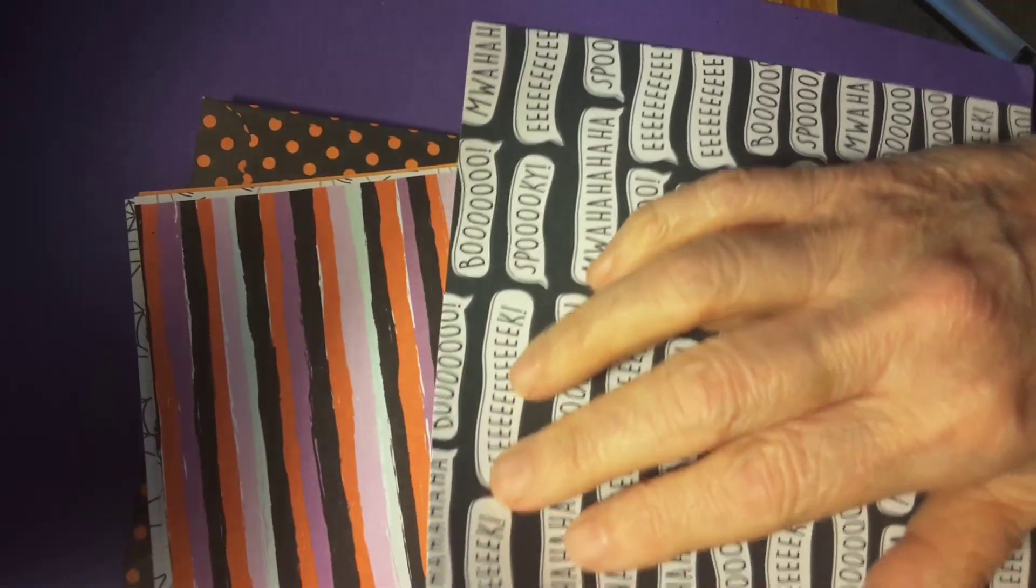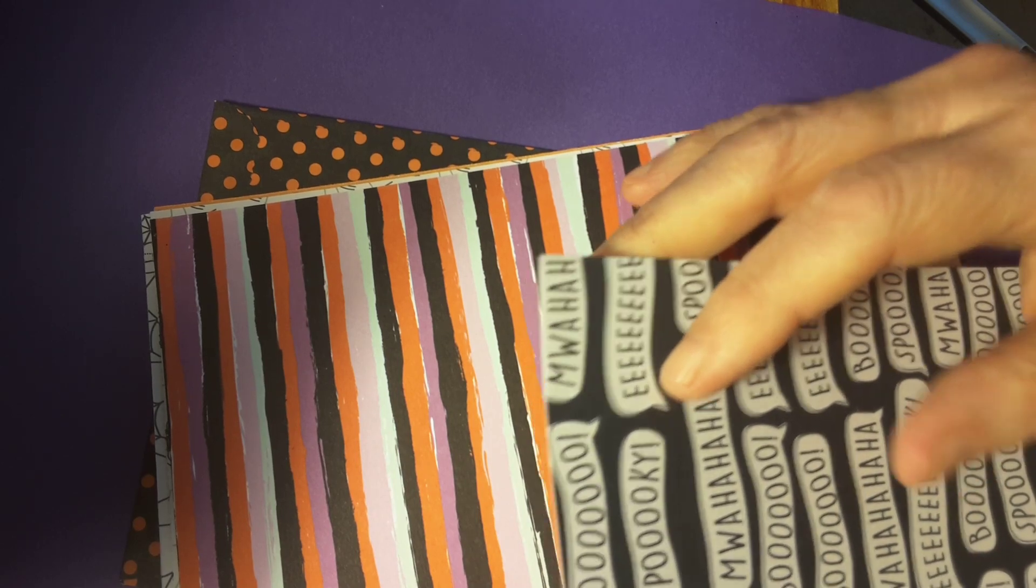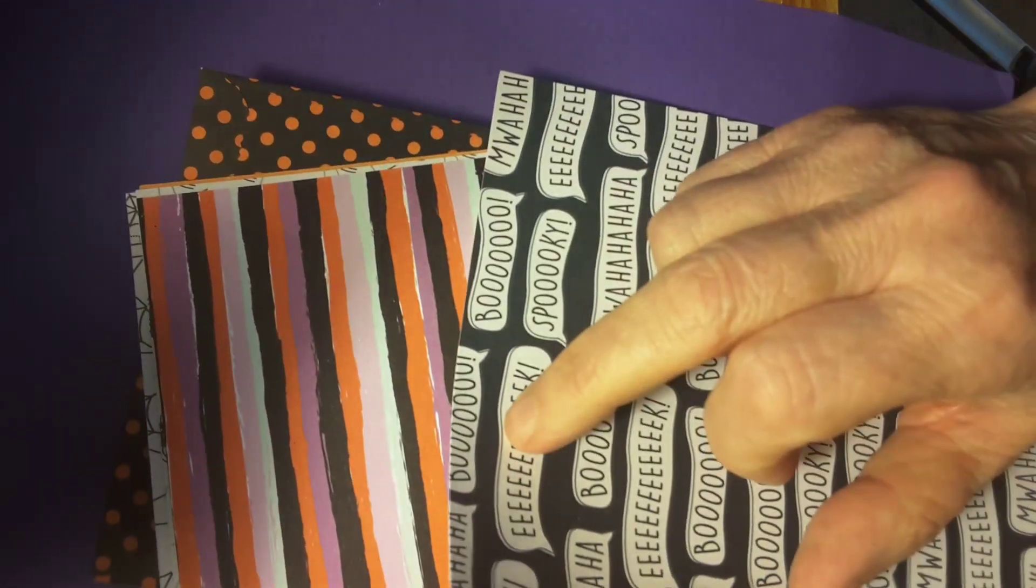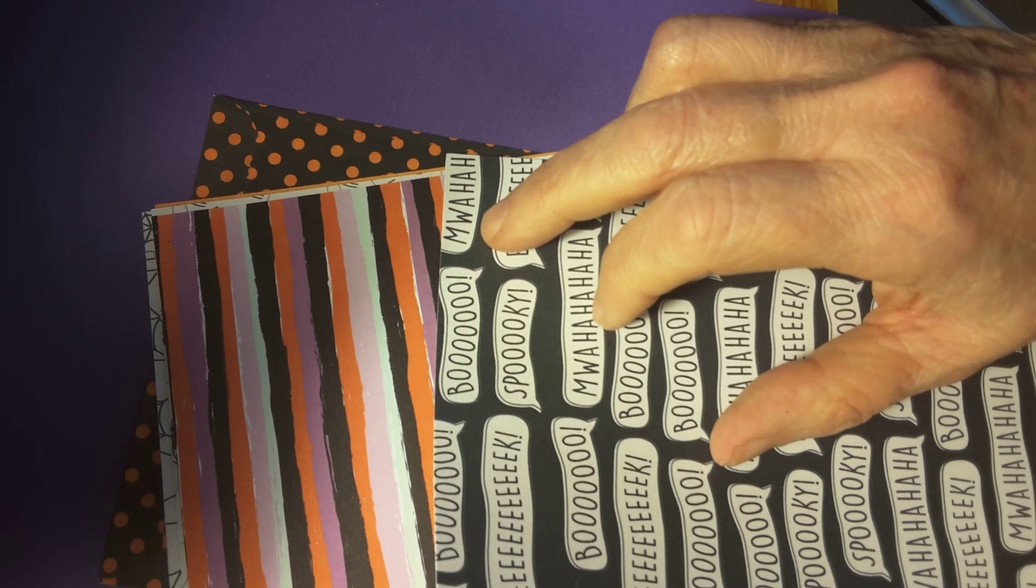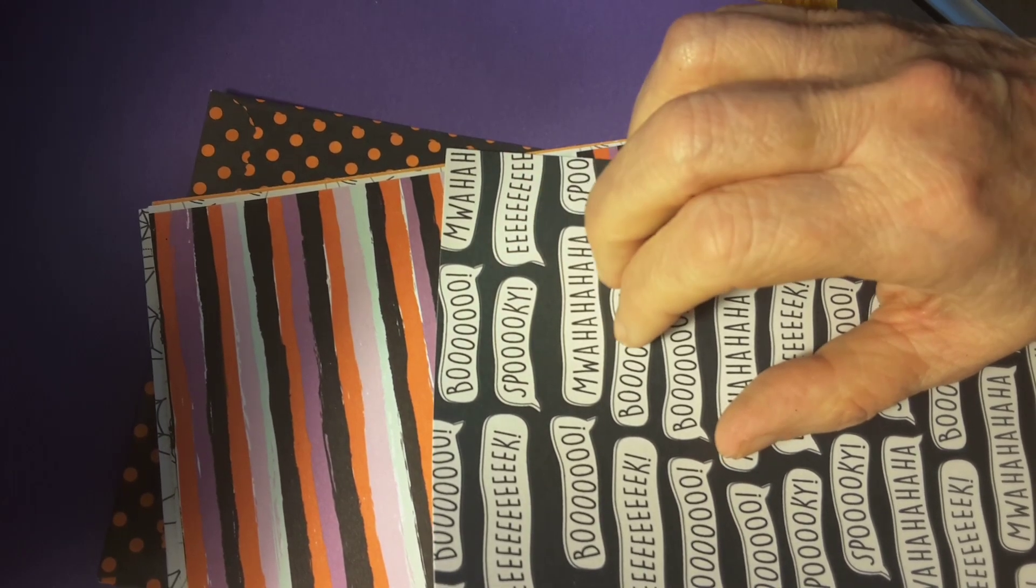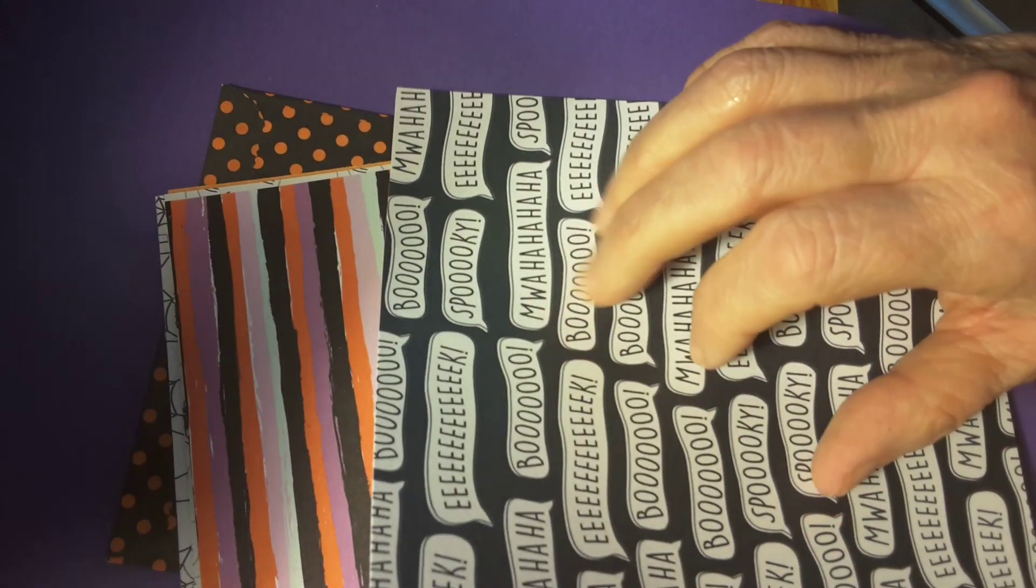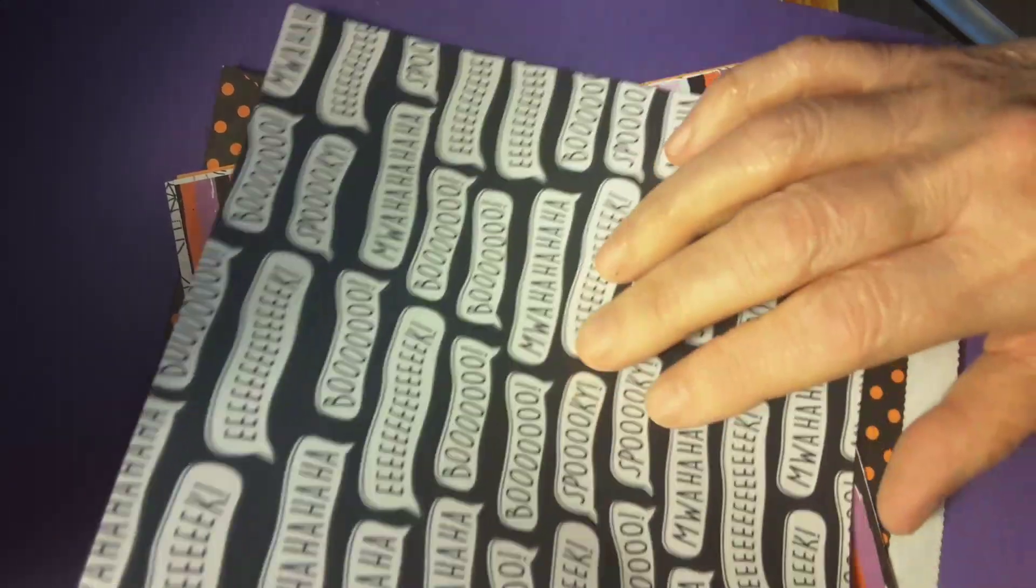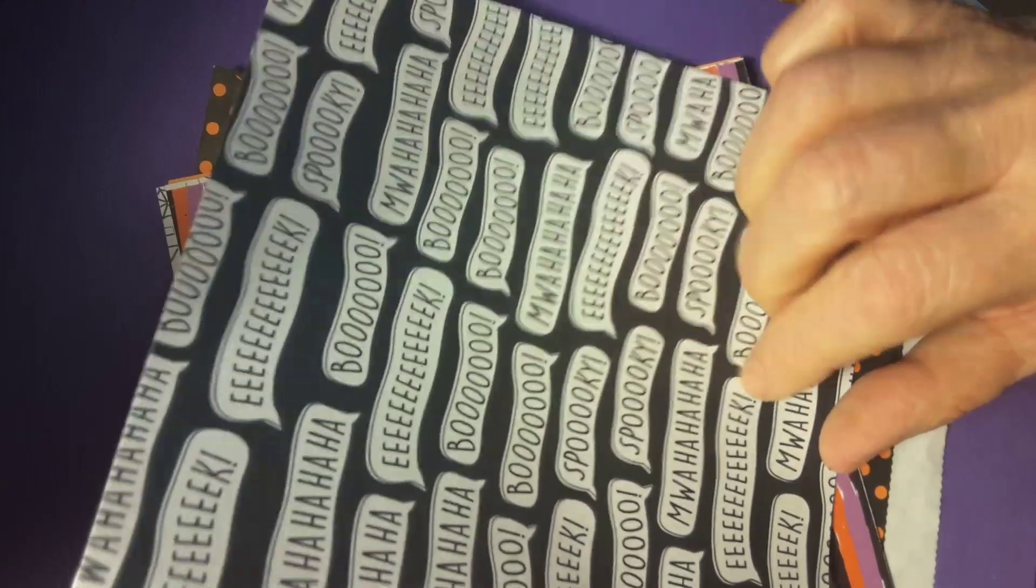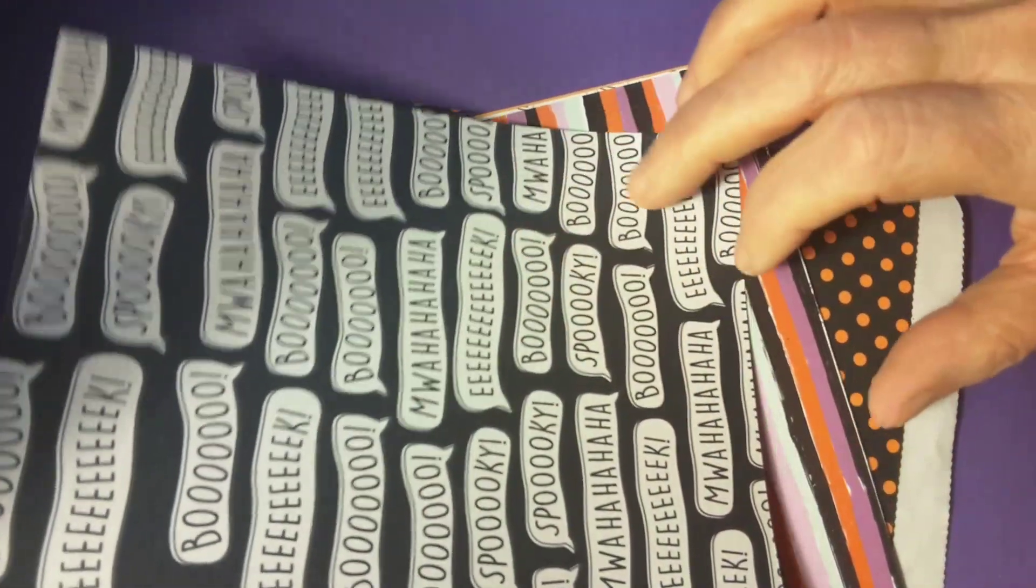And this is some words. I think it says mwa-ha-ha-ha-ha. Boo. M-W-A. Mwa-ha-ha, I think. Eek, spooky, eek, boo, boo, eek. A lot of boos. Spooky, spooky, spooky. And these are all just the same, just repeats. But I love them. They're cute.